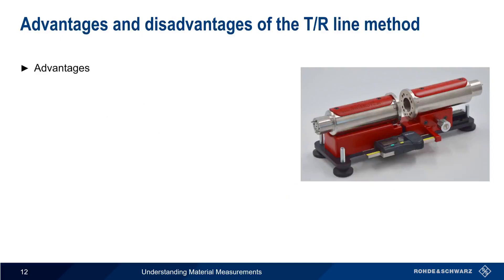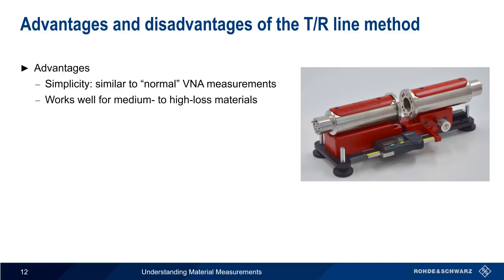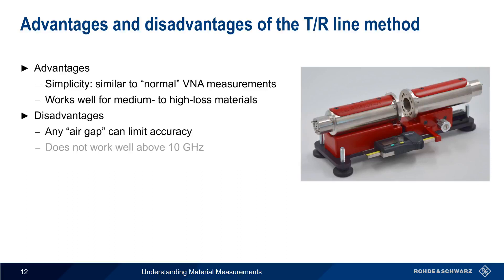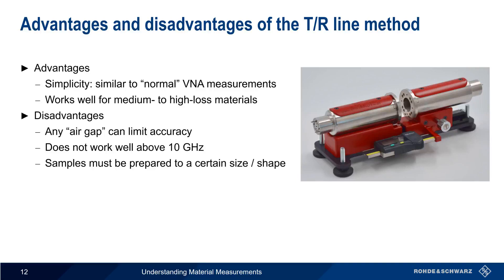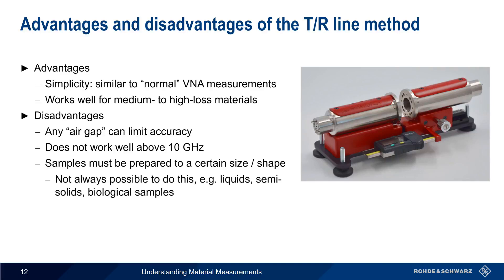Perhaps the biggest advantage of the transmission reflection line method is simplicity — it's very similar to the normal types of measurements we make with a vector network analyzer. This method also works very well for medium to high loss materials. There are, however, a few disadvantages. First, we need to ensure that the sample fits very tightly into the transmission line fixture — any air gap can limit accuracy or lead to measurement errors. This method also only works well at frequencies below about 10 GHz. But perhaps the biggest disadvantage is that the samples must be prepared to a certain size and/or shape to fit in the fixture, which isn't always possible — for example in the case of a liquid, semi-solid, or many types of biological samples.